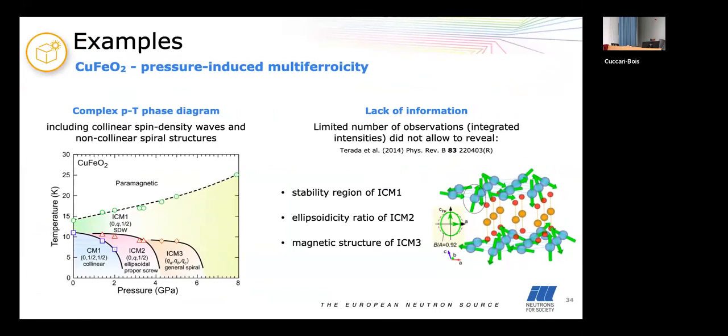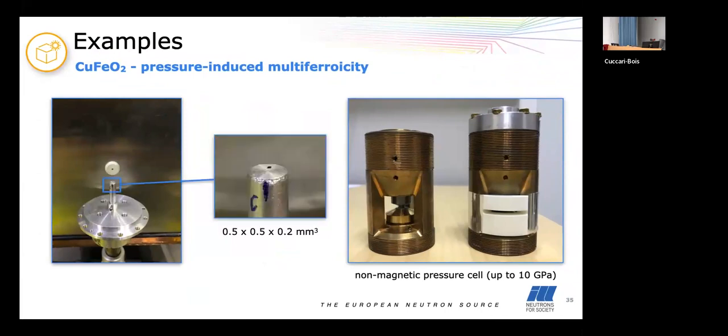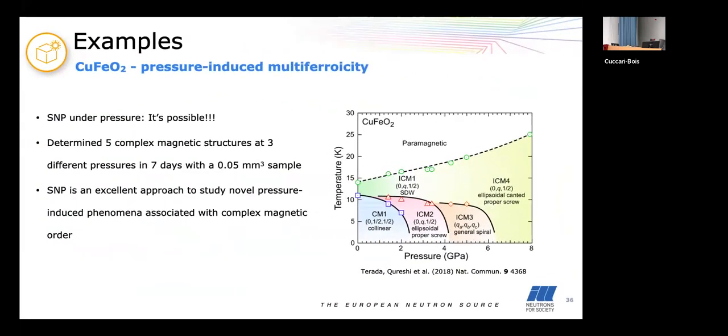So last very short example: delaphosite which is a pressure-induced multiferroic. It has a complex pressure-temperature phase diagram with at least four complex magnetic phases and what Terada and co-workers saw by investigating it using unpolarized neutrons is that they could not deduce certain information and details of the different magnetic structures. So the idea was to try SNP under pressure. In that case I was the one who was skeptical, I didn't think that would be possible because the sample is very small, very very small, and it was placed in this non-magnetic pressure cell which goes up to 10 gigapascal. And to make the story short, it is possible. We could deduce five complex magnetic structures because we found another one here in only seven days on this tiny sample. This is something which you cannot achieve using unpolarized neutrons. You can extract so much more information with SNP and that showed that it's an excellent approach to study novel pressure-induced phenomena associated with complex magnetic order.